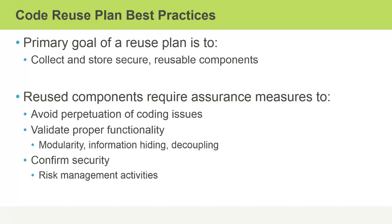In addition to avoiding perpetuation of coding issues, you want to make sure your code components have proper functionality. It's not enough to assume that code used successfully in another environment has obeyed all software engineering guidelines. Is the code modular? Do you have well-defined modules and classes with clear purposes that stick to those purposes? Do you have information hiding — are you only exposing what absolutely must be exposed? This becomes more important with reusable components because they're being used in other applications, and you don't want to expose additional functionality or information unnecessarily.